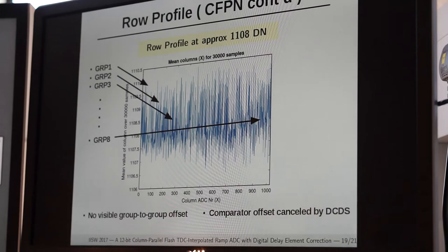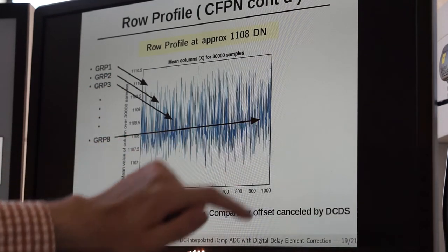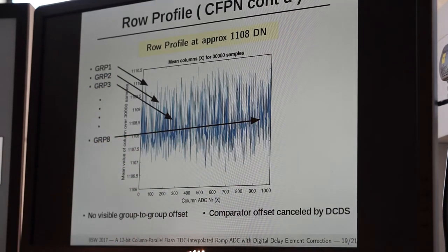This is a plot of the raw profile showing the mean of all 1024 columns for 30,000 samples. As you might notice, there is barely any offset between the columns.